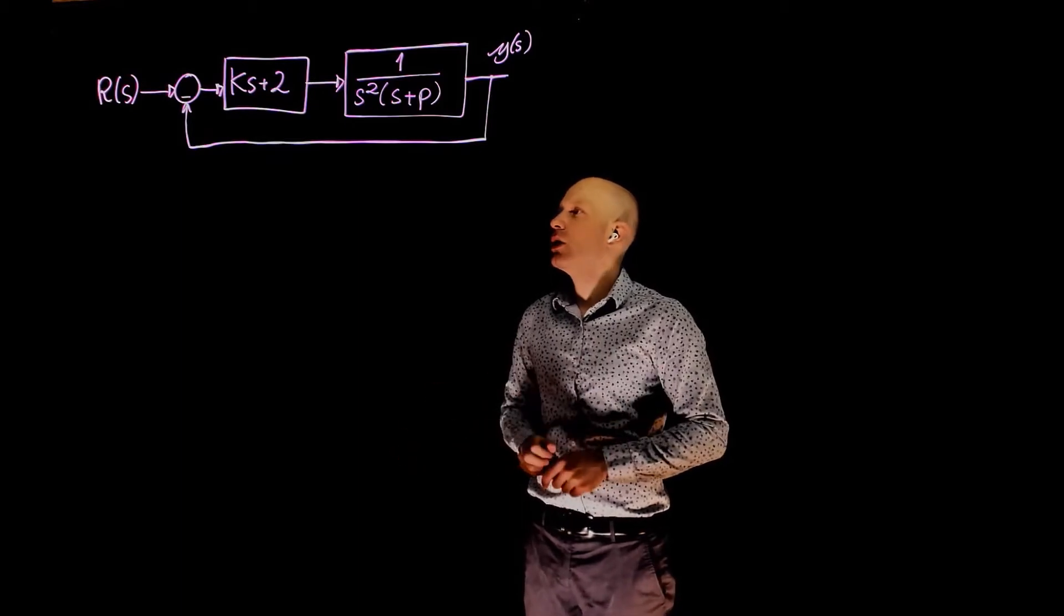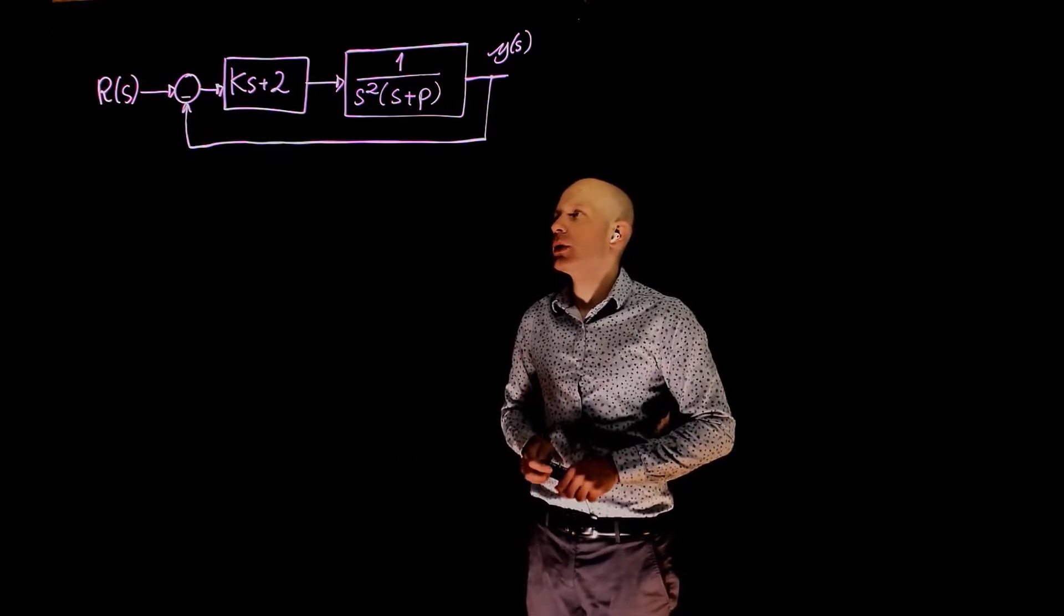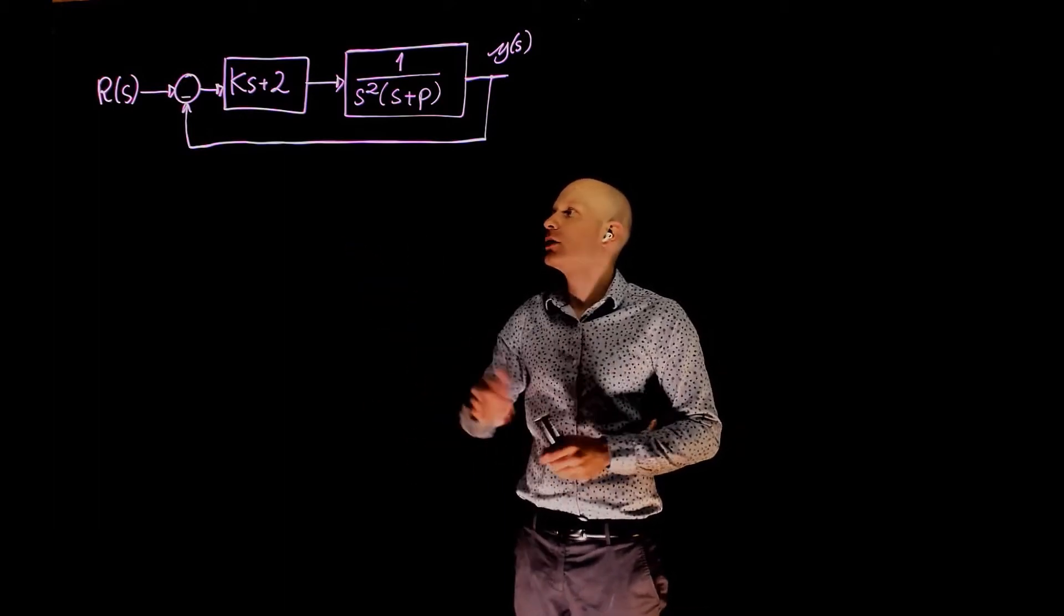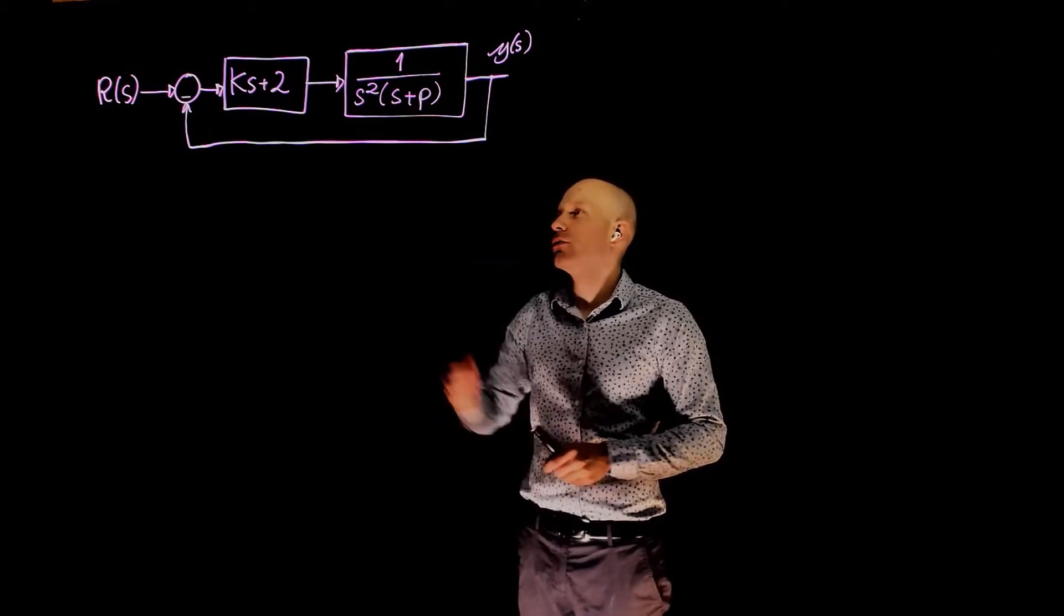To do that, we can use the Routh-Hurwitz stability criteria and we'll need the transfer function. So, first step, let's define the closed-loop transfer function y over r.